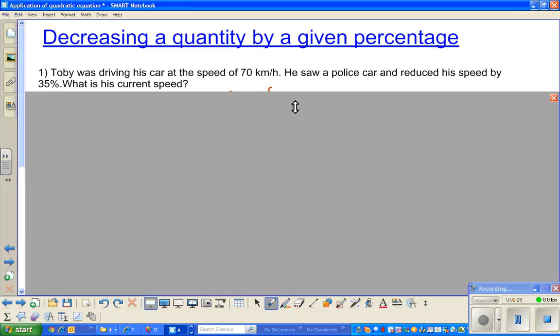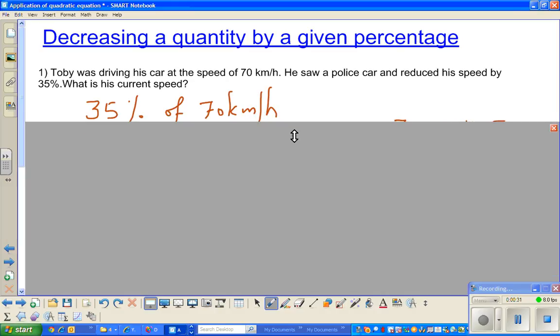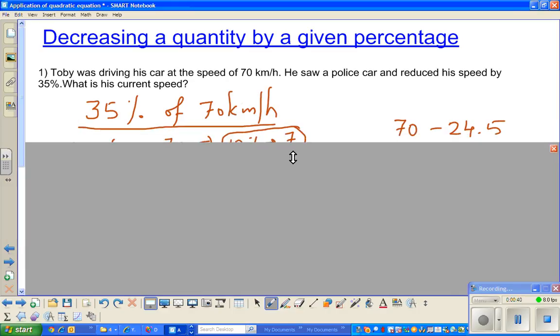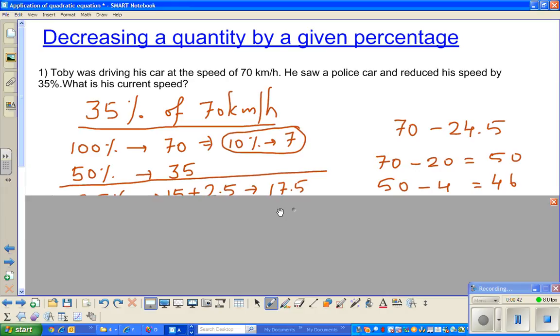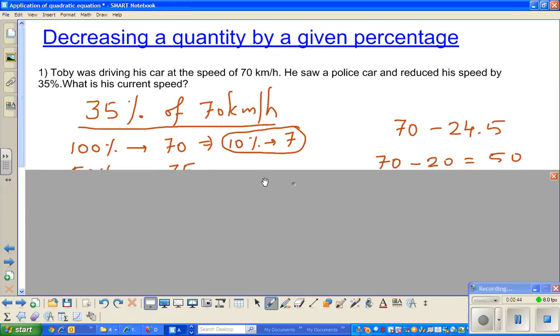I've already done the working. The first thing that we want to find is 35% of 70 kph. Let me go over this one by one. The first thing you should know is 100% of 70 would be 70. If 100% is 70, 10% is 7, because 10% is one-tenth of 100%.